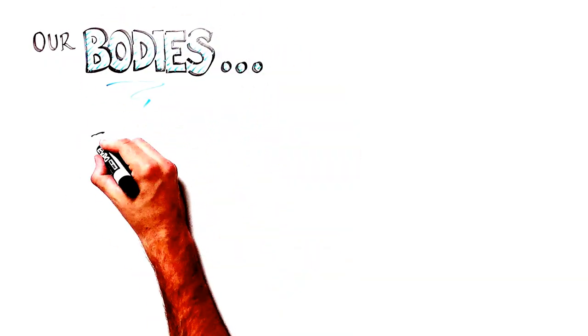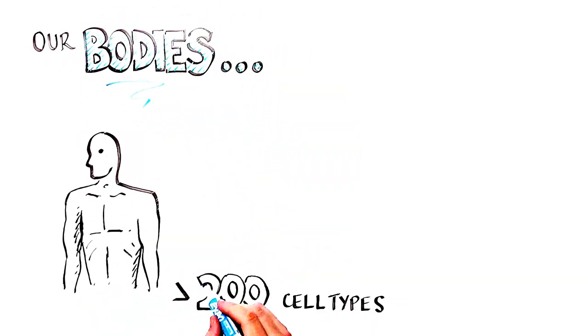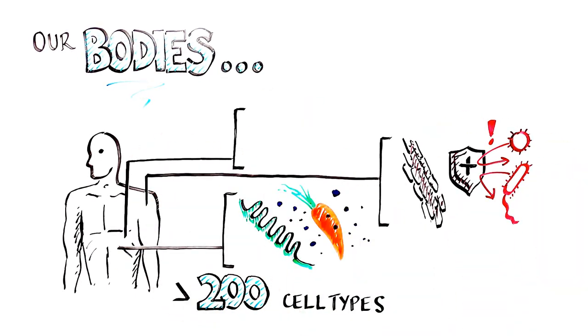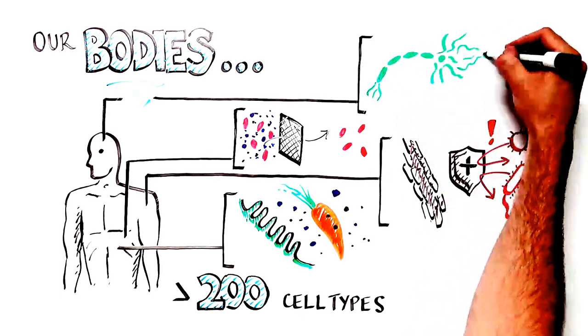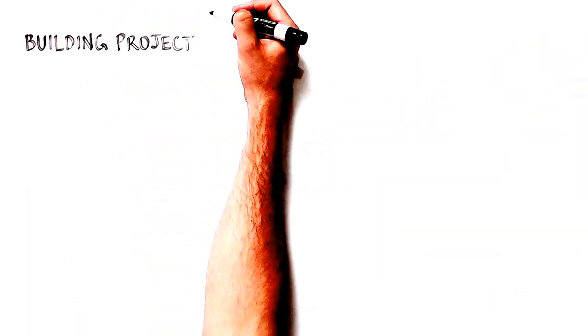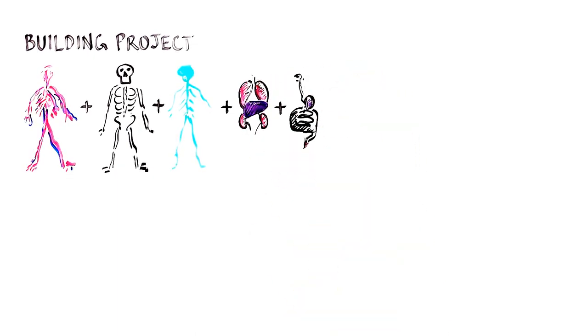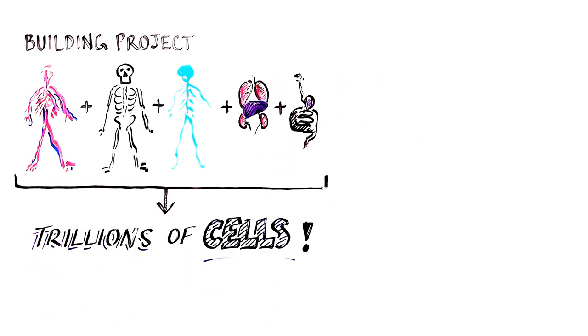Our bodies are comprised of more than 200 types of cells that protect us from invaders, digest our food, detoxify our blood, preserve memories and much more. Think of our bodies as an extremely complex construction project made from hundreds of parts built from trillions of cells.